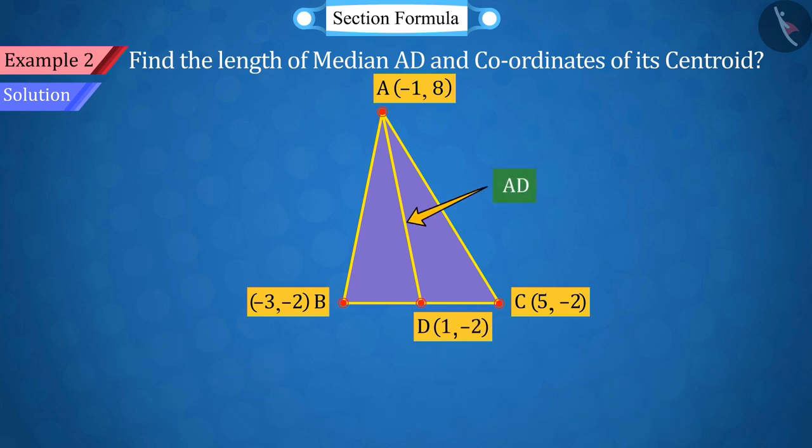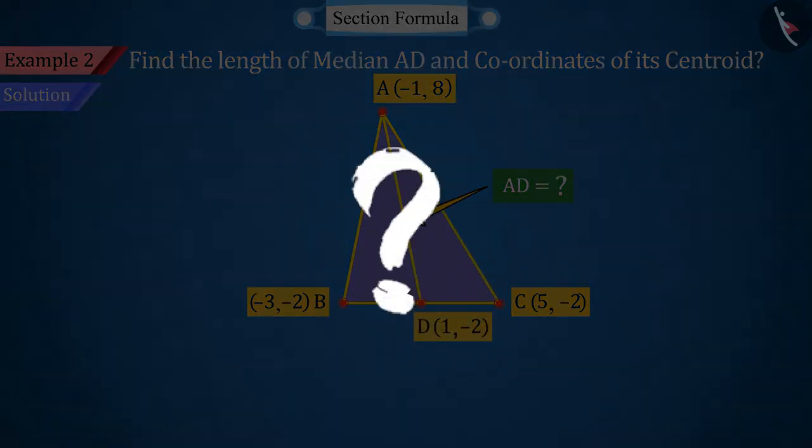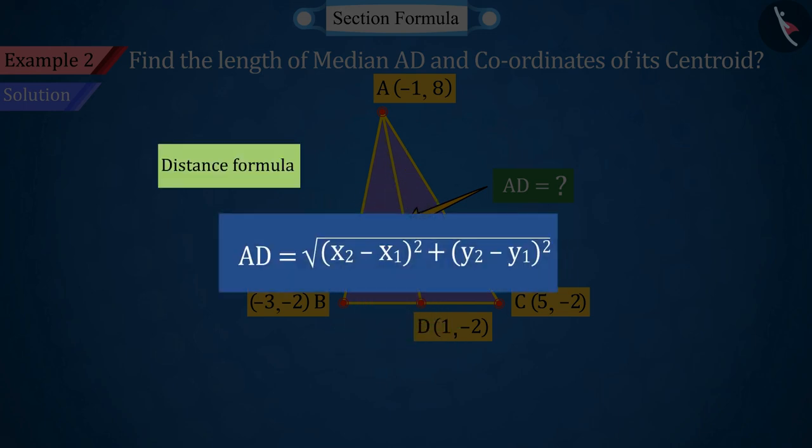The coordinates of point D are obtained as (1,-2). Since the length of the median AD is to be determined, can you now find the value of AD?